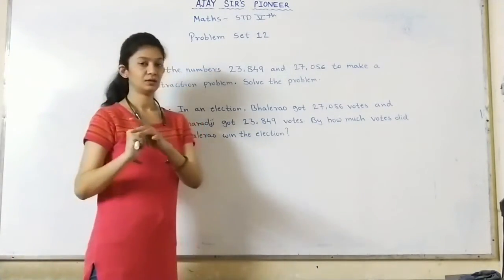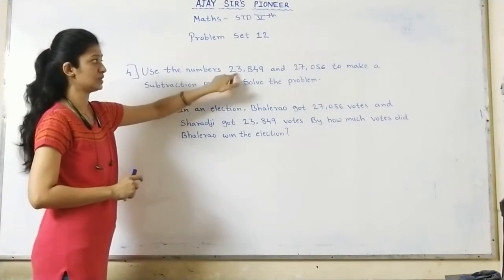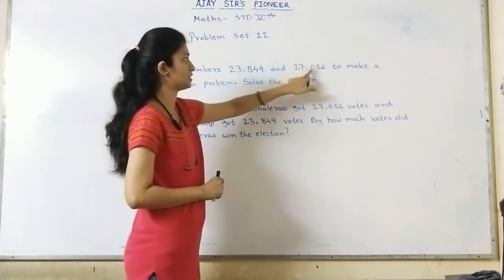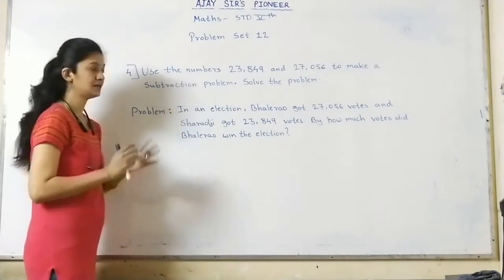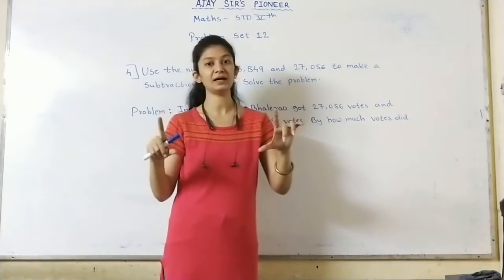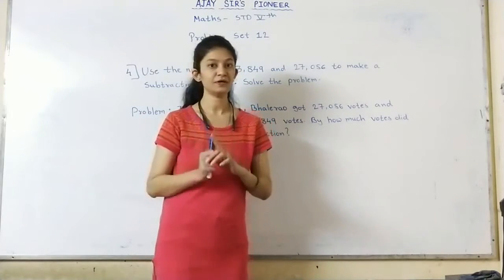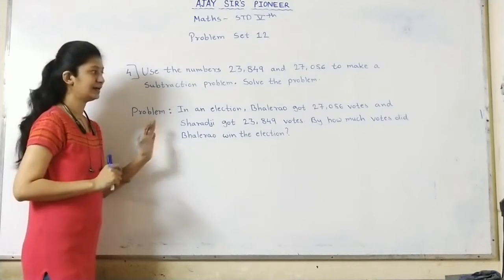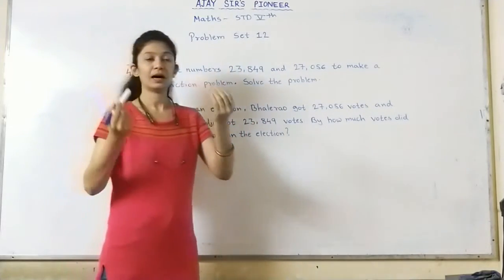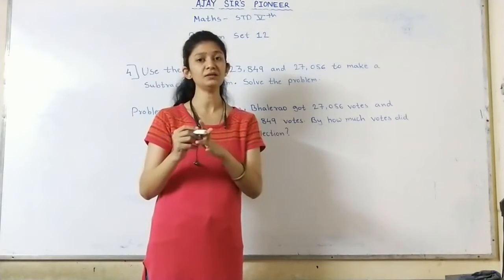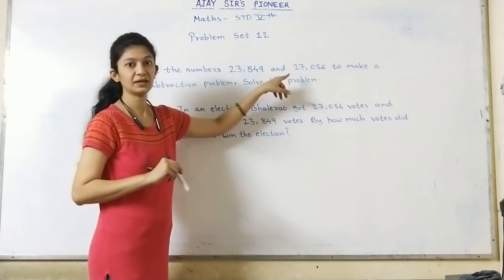Okay children, let's solve our last question. Read the question first. Use the numbers 23,849 and 27,056 to make a subtraction problem. Solve the problem. That means we need to make a question using these two numbers and then solve the subtraction. First of all, we need to write the problem.